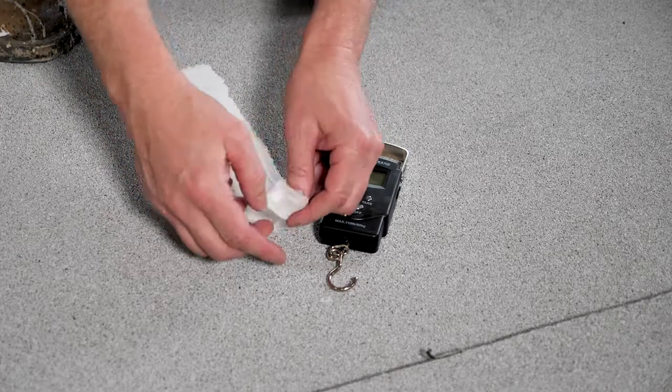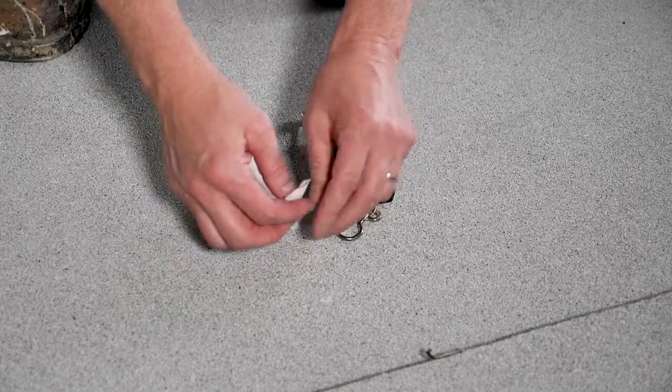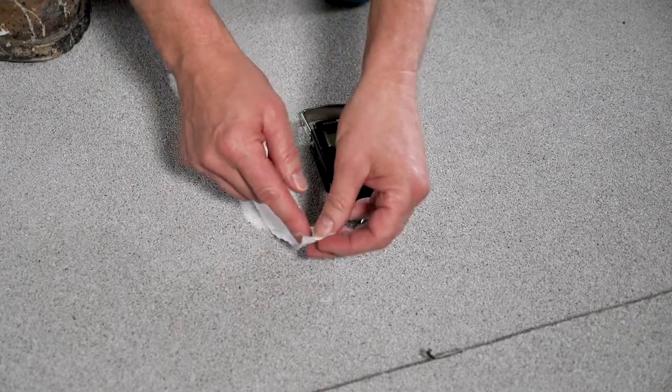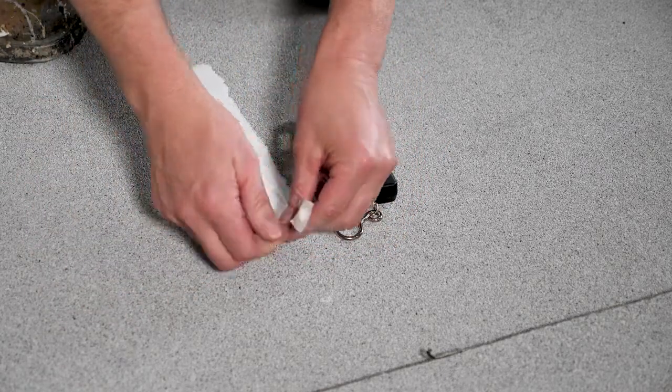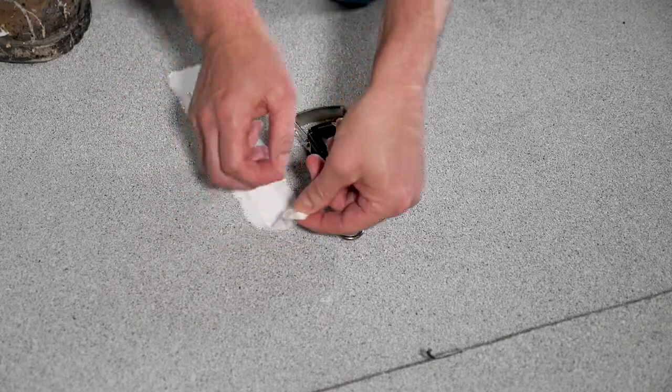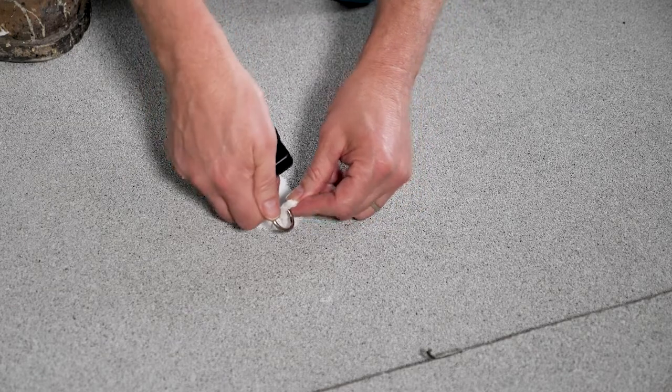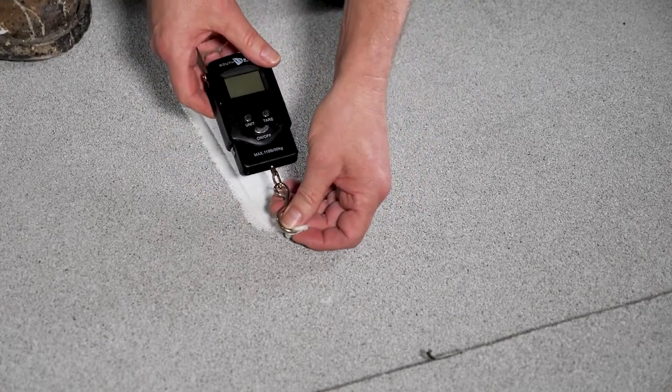Tie it around the hook of the fish scale. You don't want to poke a hole in this with a razor blade because it will just tear. Tie your knot, then hook this in and tie it nice and tight. Then you're ready to do your pull test.